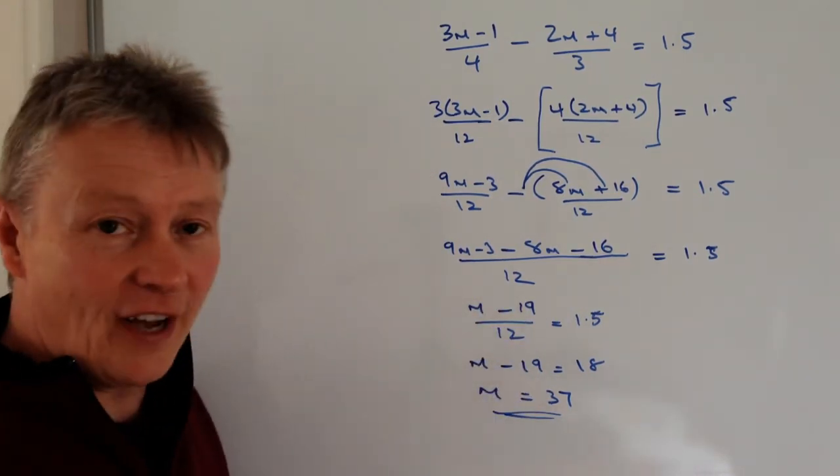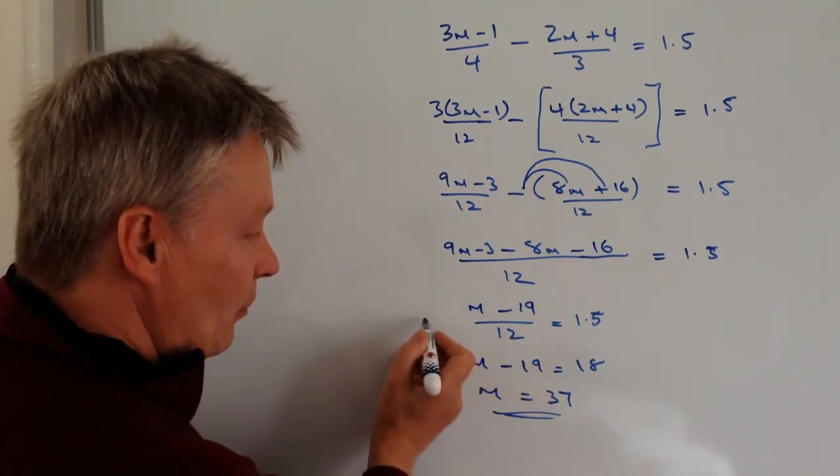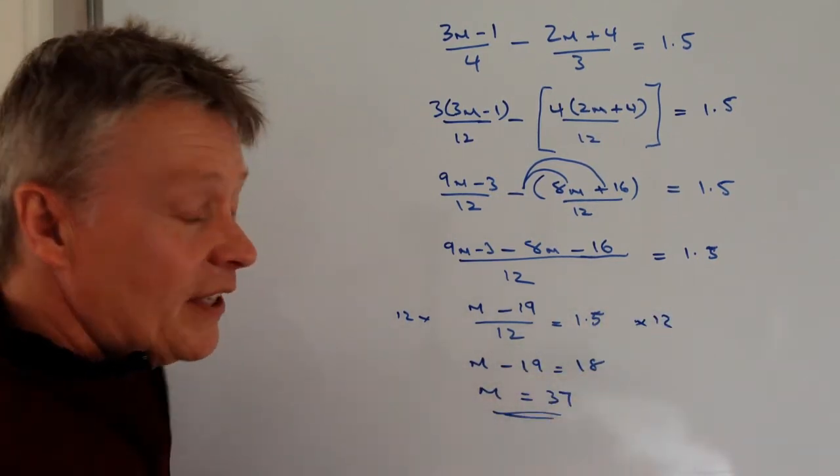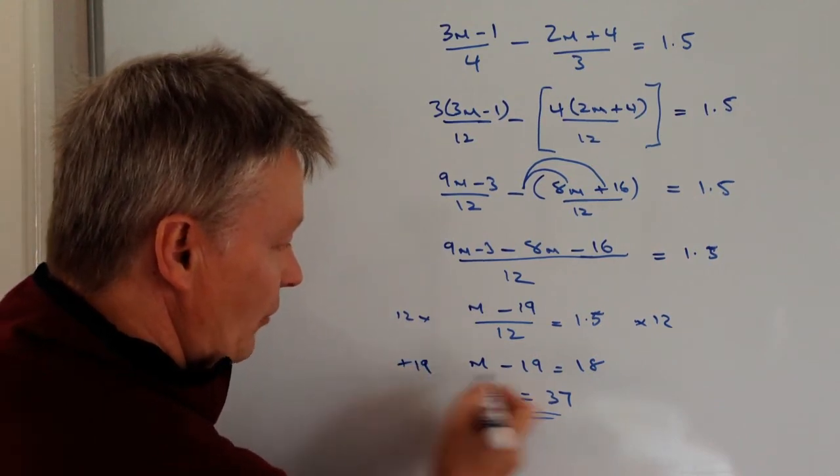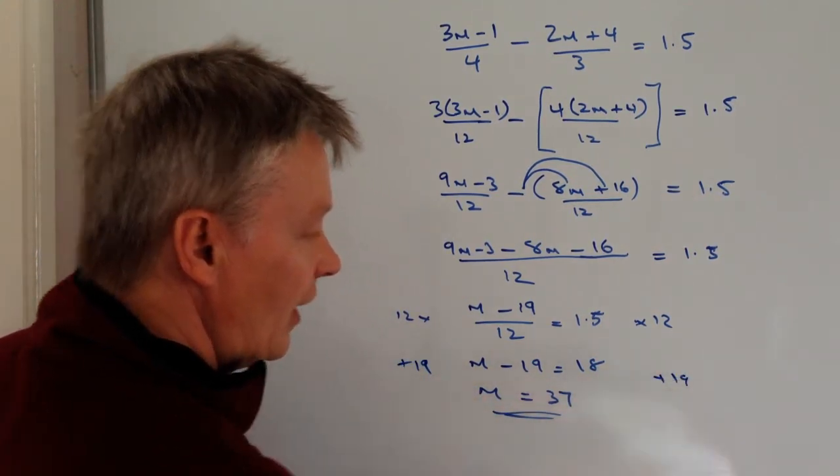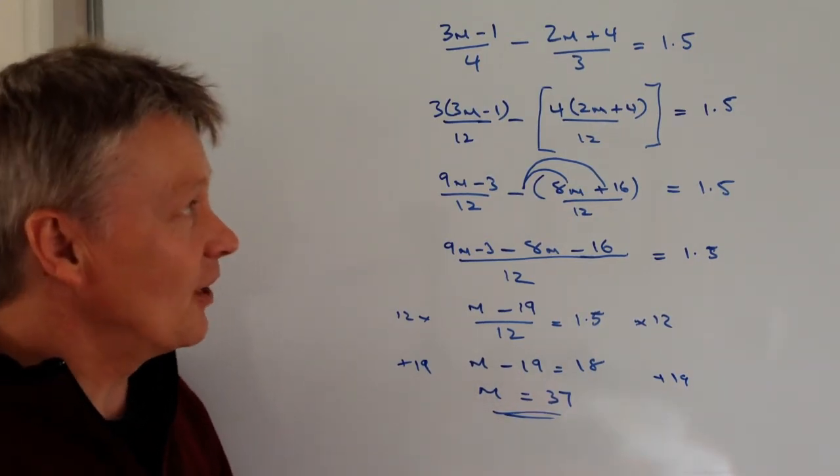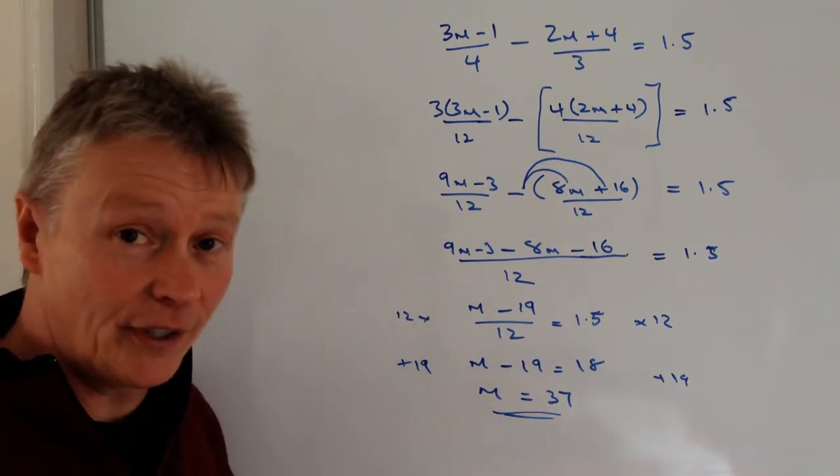So I've skipped it through fairly quickly towards the end there, but as you can see here, I'm multiplying both sides by 12, and 1.5 times 12 is 18, and then I'm adding 19 to both sides, and that means 18 plus 19 is 37. So we've gone from what was a fairly difficult linear equation through to a value of m at 37.